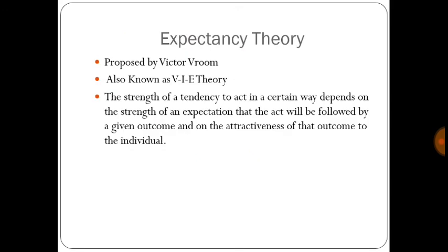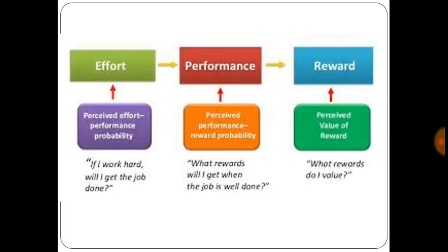The sixth theory is expectancy theory, proposed by Victor Vroom, also known as VIE theory. The strength of a tendency to act in a certain way depends on the strength of an expectation that the act will be followed by a given outcome, and on the attractiveness of that outcome to the individual. Whenever an individual puts in effort, he gives the performance, and then on the basis of that performance, he is motivated towards reward.